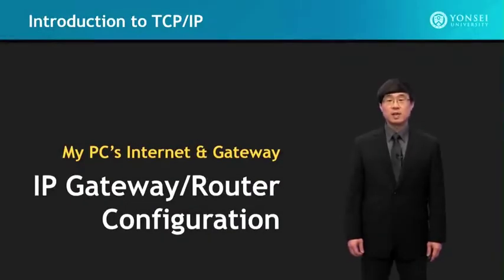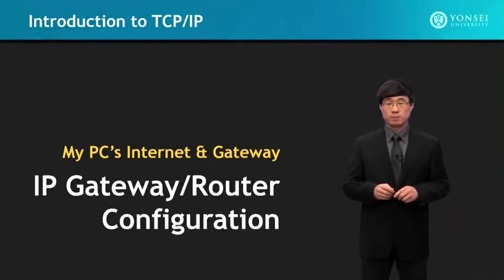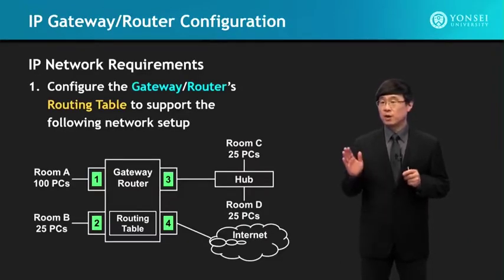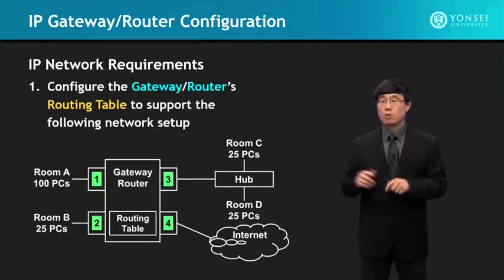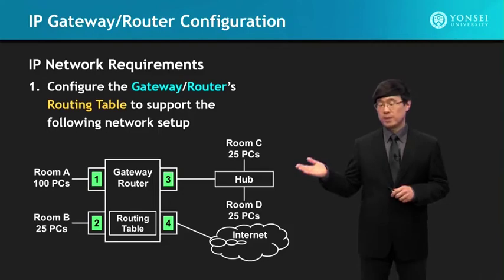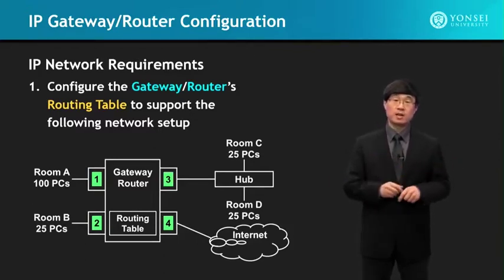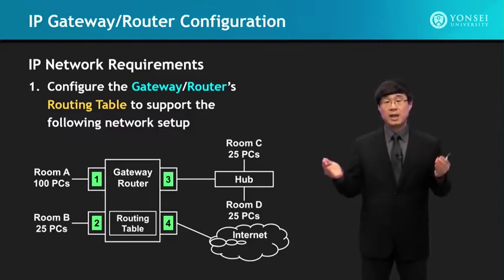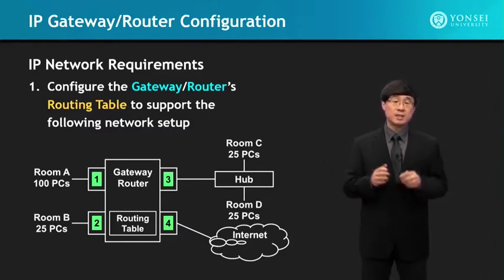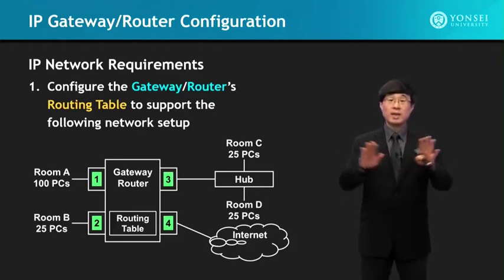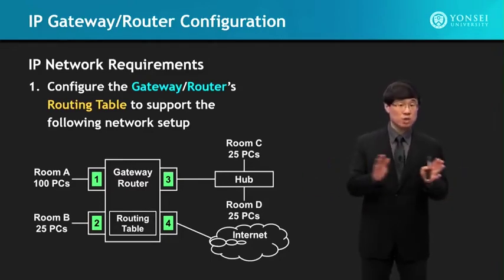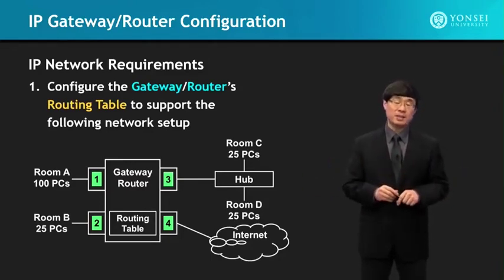In this lecture, we're going to study about IP gateway and router configuration. The IP network requirements are to configure the gateway, the router, and the routing table to support the following network setup. We're going to learn how to set up an IP routing table through an actual experiment. Think of it like this: rooms A, B, C, and D are like computer labs, and we need to set up a router so all these PCs can access each other and send and receive packets through the Internet.